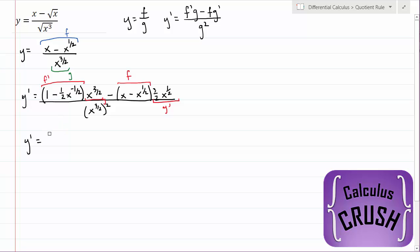Let's simplify this. We need to expand this first term. 1 times x to the power of 3 halves is just x to the power of 3 halves, minus 1 half. Remember, when we multiply two expressions, we need to add the exponents. 3 halves minus 1 half is 2 over 2, which is just 1. So we have 1 half x for that second term.